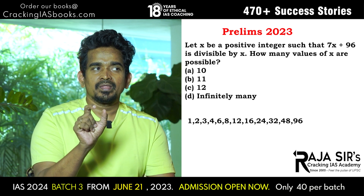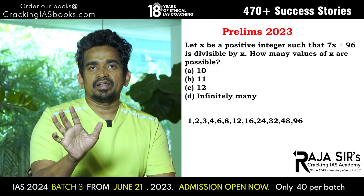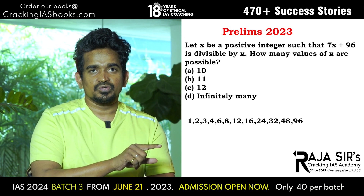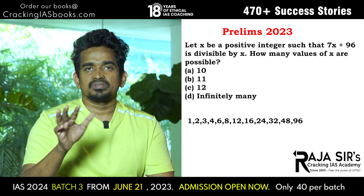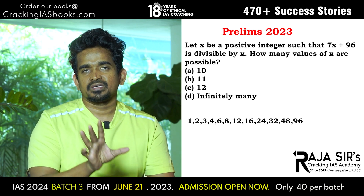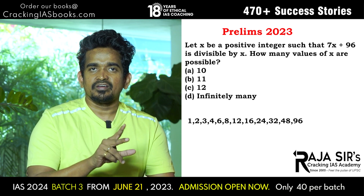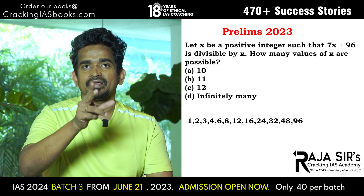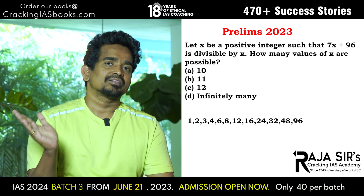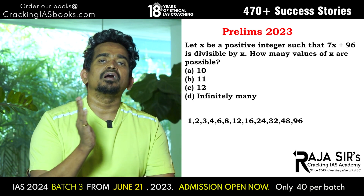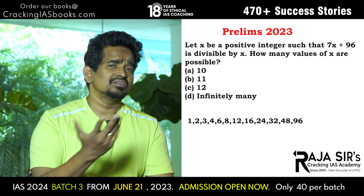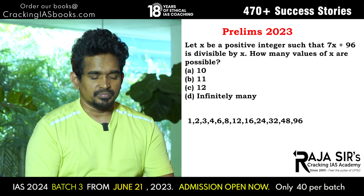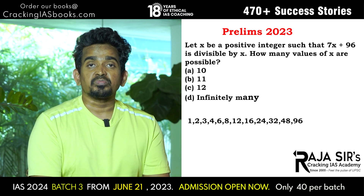Normally, suppose you say 7X plus 9X — you take X common out. That means X into 7 plus 9, something like that. This is simple logic. Like that, 7X plus 96, you write 96 as 96 into 1, or 48 into 2, and so on — splitting into factors. Then you can take the common factor outside, and naturally it is going to be divisible. So that is all. This is a very simple problem. The answer is Option C: 12.